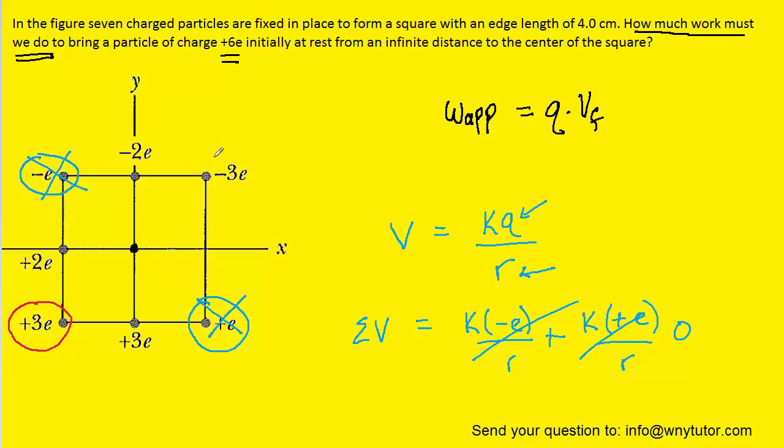we're going to end up ignoring these two charges as well. Because once again, they're the same distance to the center of this square. And their charges have opposite magnitudes. This is negative 3e and this is positive 3e. So they too will have potentials that cancel each other out.